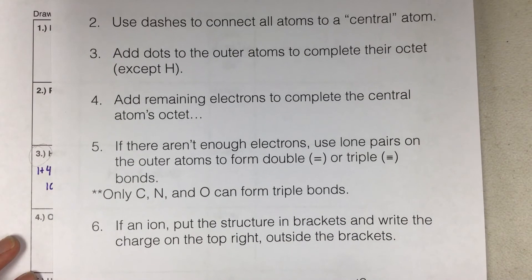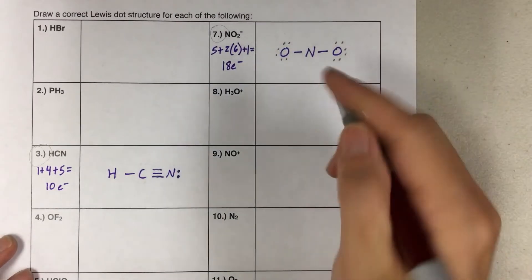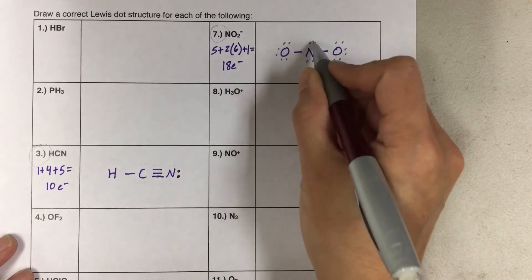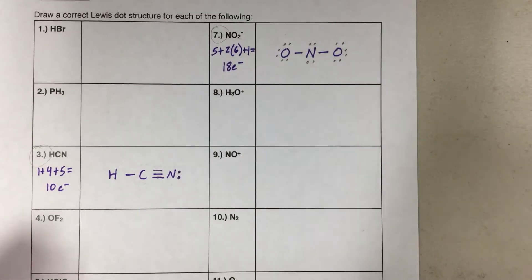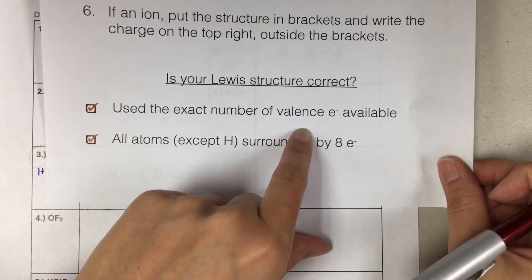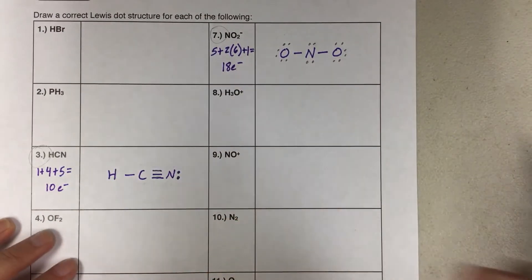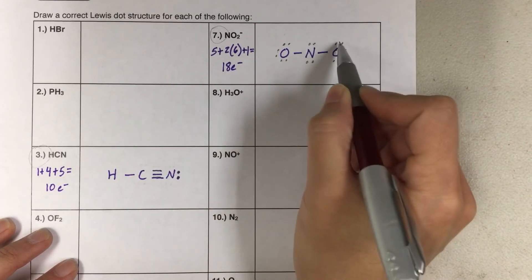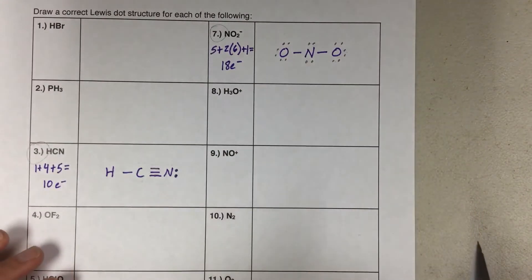Back to our steps. Add remaining electrons to complete the central atom's octet. Nitrogen needs two more. So now nitrogen has 2, 4, 6, 8. So it's happy. But we think we're done. If we think we're done, we count up the number of valence electrons and see if it matches what we had to begin with. And actually count these. 2, 4, 6, 8, 10, 12, 14, 16, 18, 20. We have an extra pair. Problem.